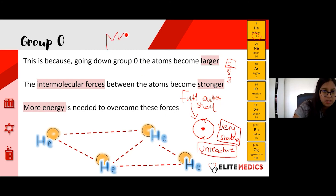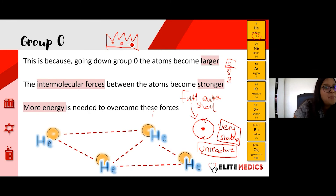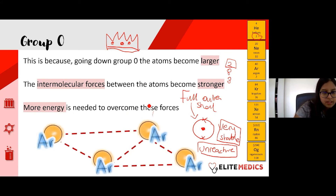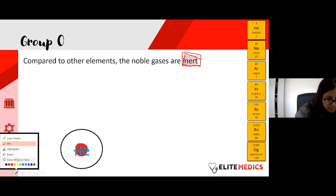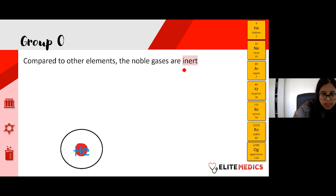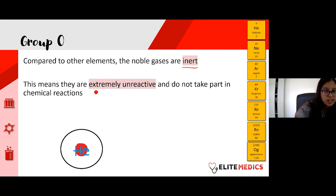Stable things don't like to react, so noble gases are unreactive and stable. That's why I think of them as royalty — they don't need to interact with anyone. Compared to other elements, because they're not reactive, we call this 'inert'. Inert means they are extremely unreactive and don't take part in chemical reactions. The atoms have a full outer shell.